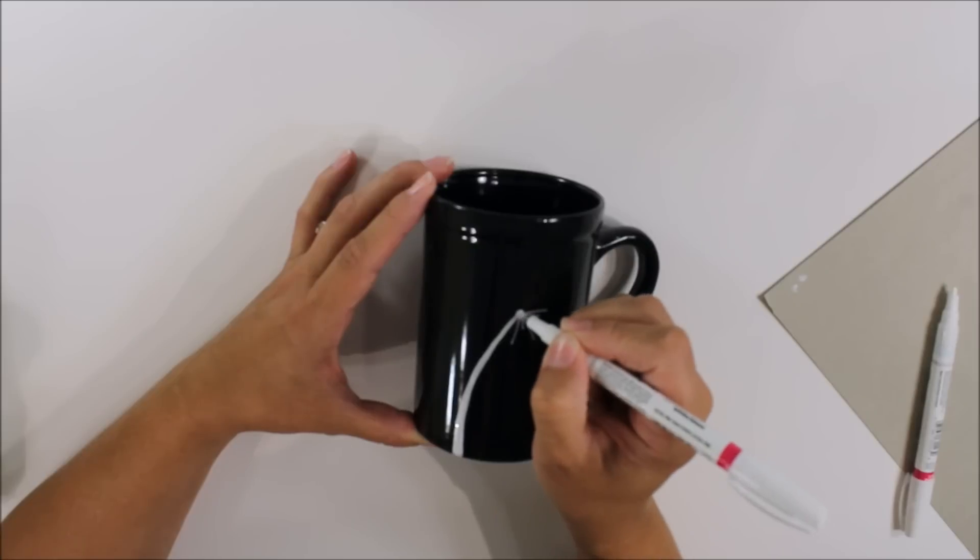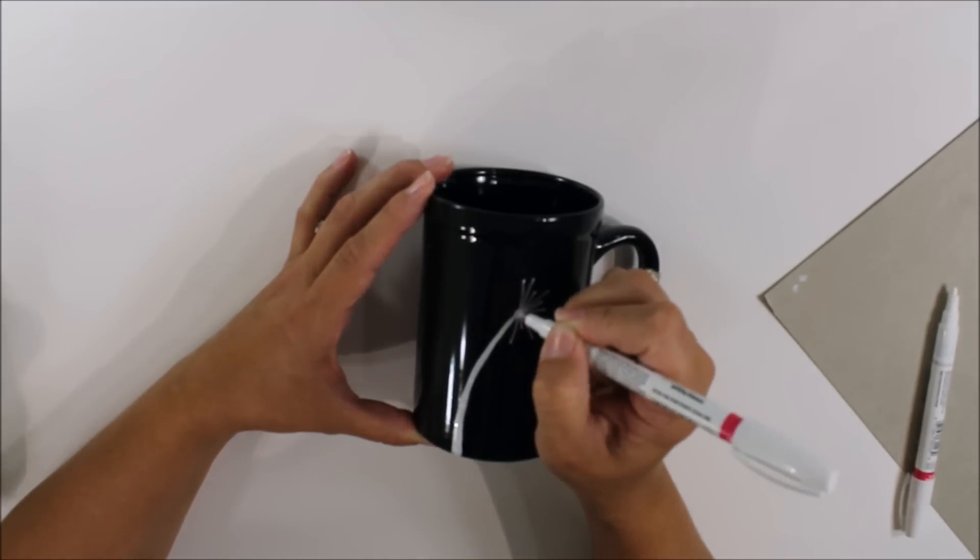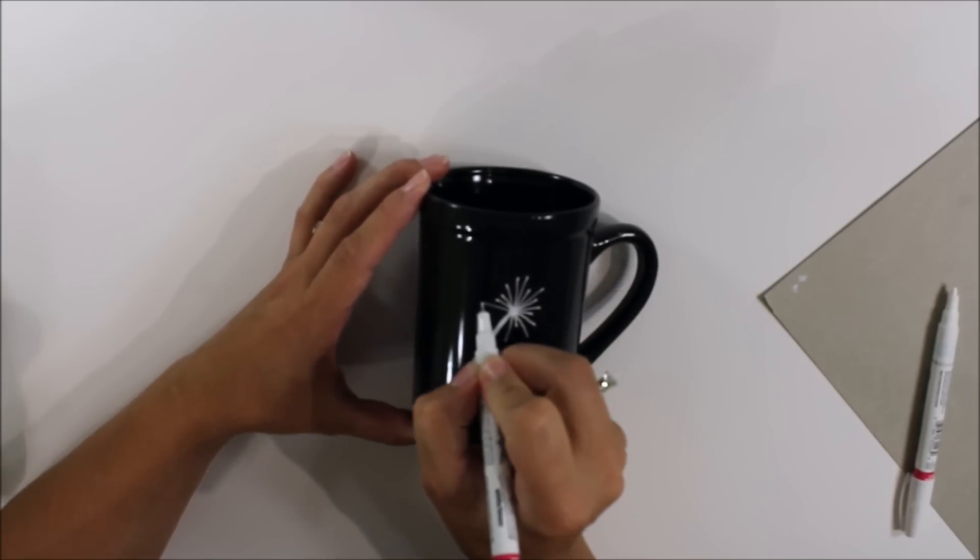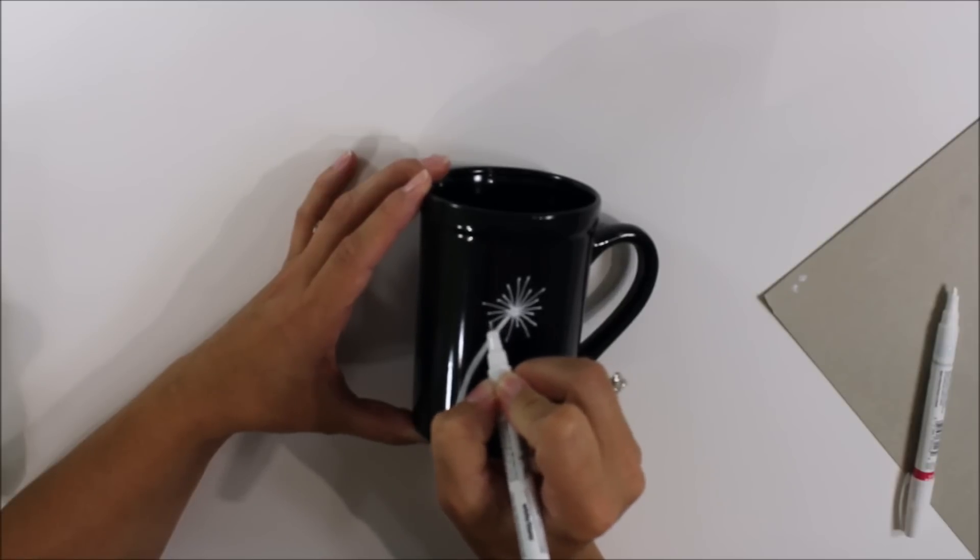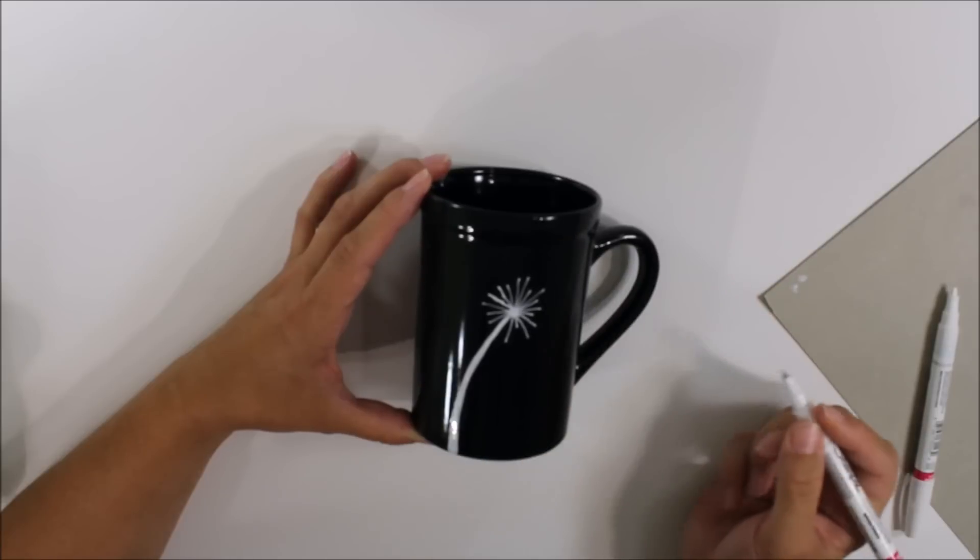Mine aren't straight, but you just kind of want to spread them out around the mug. You can make them a little longer if you want. Do a couple short ones in there.